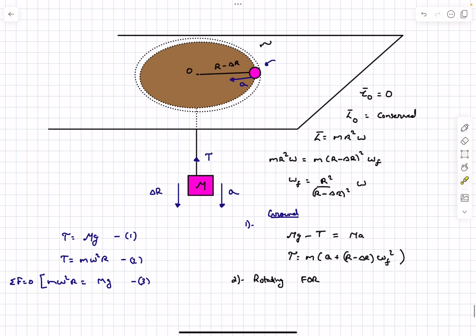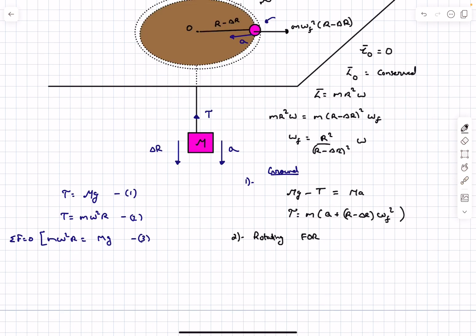And secondly, if you want to write it with respect to the rotating frame of reference, you have to provide a centrifugal force which is m omega final squared (R minus delta R), and now you can write one single equation for the entire system as tension is now an internal force. The equation is going to be Mg minus m omega final squared (R minus delta R) equals capital M plus small m times a.